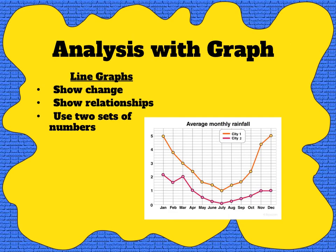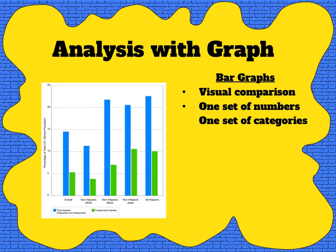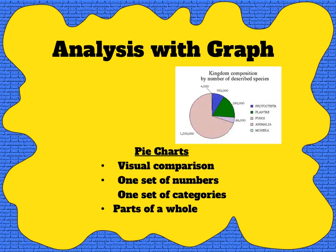We can also analyze graphically. A line graph is designed to show patterns of change and relationships between variables; we can usually tell when one is needed because our data will be two sets of numerical data, sometimes more if we have more than one dependent variable. Some data is best analyzed with a bar graph, which is a visual comparison when we have categories with numerical values to compare — you can see how easily those patterns are visible. Pie charts are visual comparisons showing how parts of an entity compare to one another for one variable, and you can easily see the magnitude of differences.